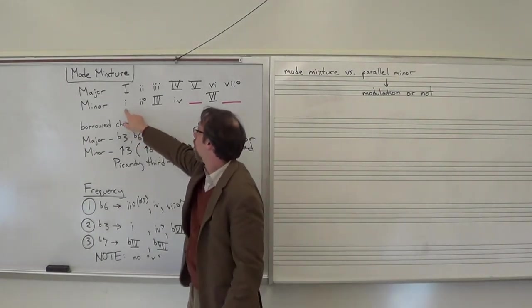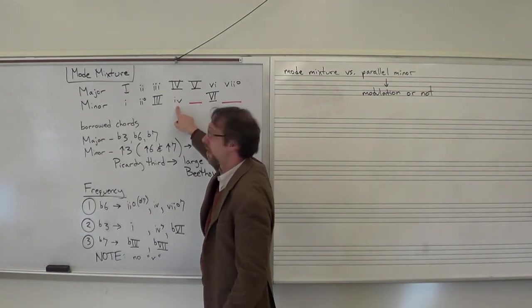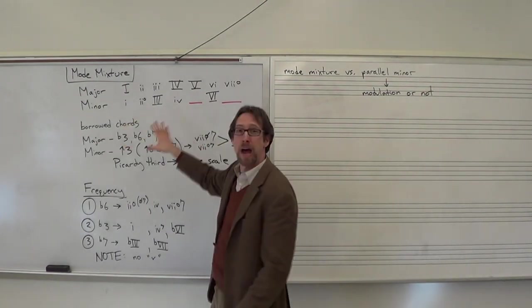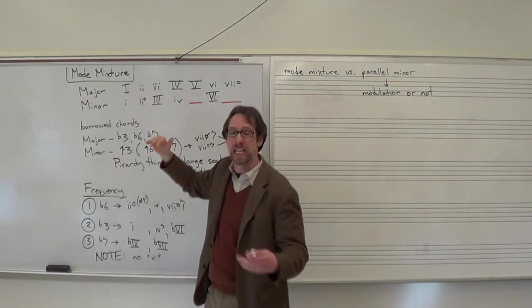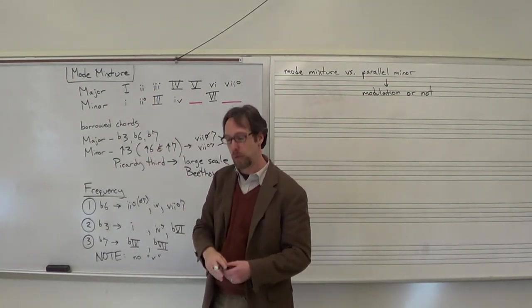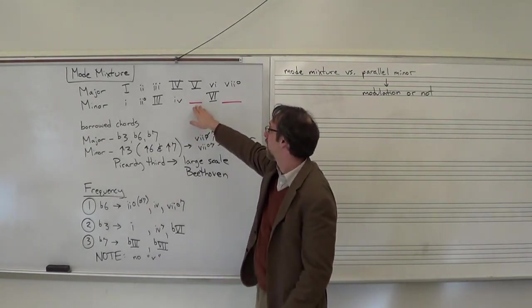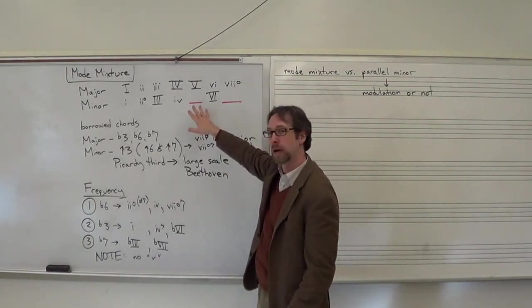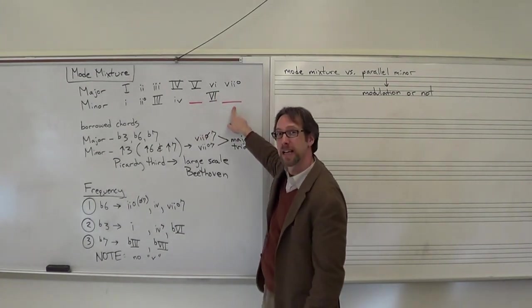In a minor key, one is minor, two is diminished, three is major, four is minor. So up until now, everything is different. Whatever was in major, it's a different sonority when you go to minor. You'll notice I put a dash here and I didn't put in the five chord. You'll notice that six is different, and the same thing with seven.